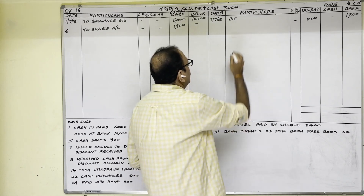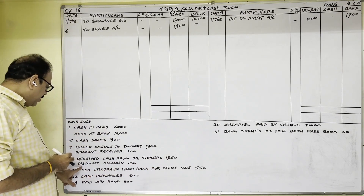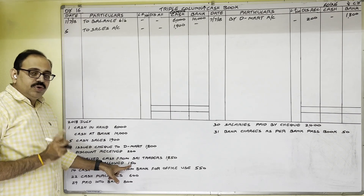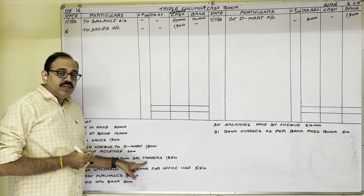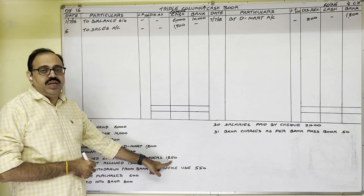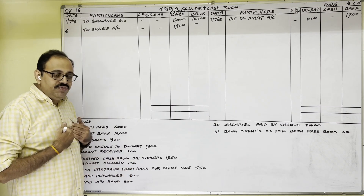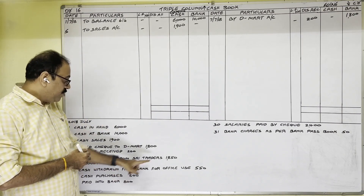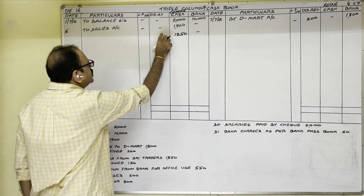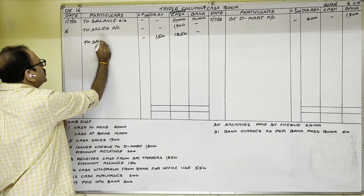8th date: received cash from Side Traders 1,850, discount allowed 150. Side Traders owed 2,000 rupees; as final settlement they paid 1,850, so we allowed 150 rupees discount. Cash is coming from Side Traders into the firm — debit side cash column. 8th date: cash column 1,850 rupees, discount column 150 rupees. In particulars column write Side Traders account.